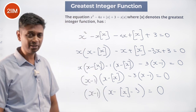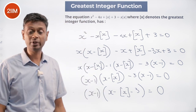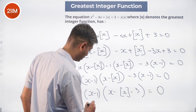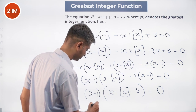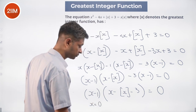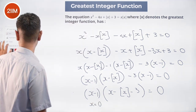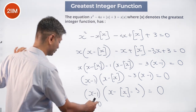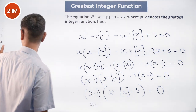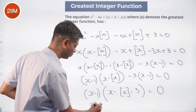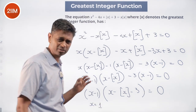Now, x minus 1 goes to 0 when x equals 1. So x equals 1 is a solution.